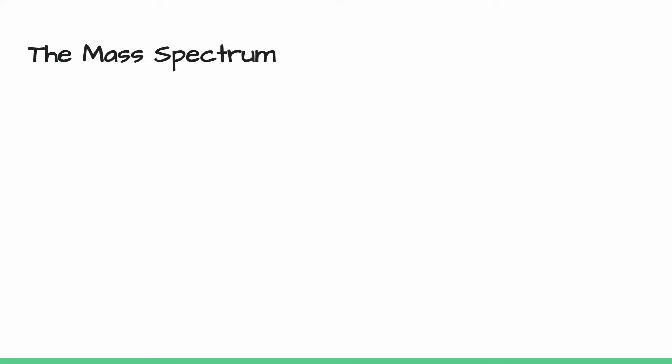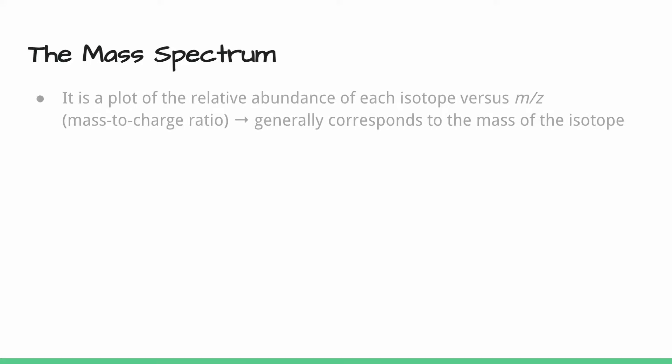What we end up getting from a mass spectrometer is something called a mass spectrum. This is a plot, a graph of the relative abundance of each isotope on the y-axis versus the mass-to-charge ratio (m/z) that generally corresponds to the mass of the isotope. You don't need to worry too much about the mass-to-charge ratio—it's really what charges are created as we're ionizing these different isotopes—but generally that ratio is really just the mass of the isotope because most of the time the charge is just plus one.